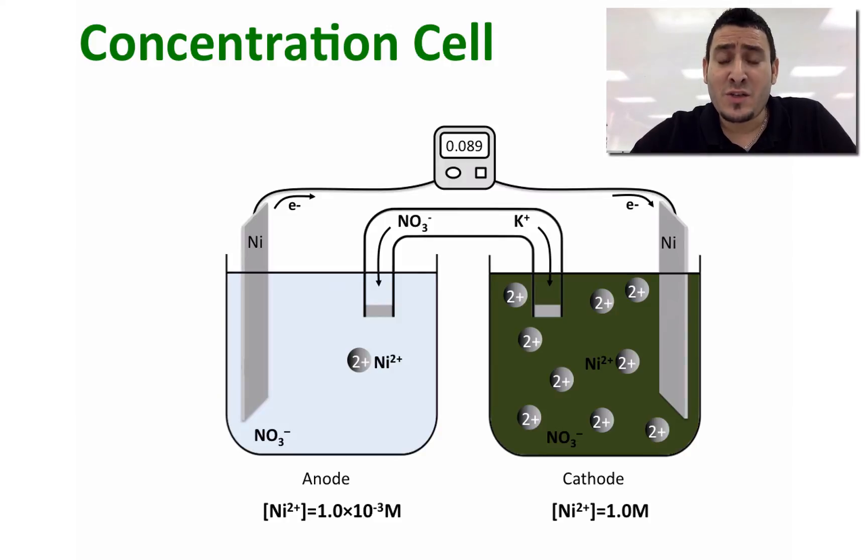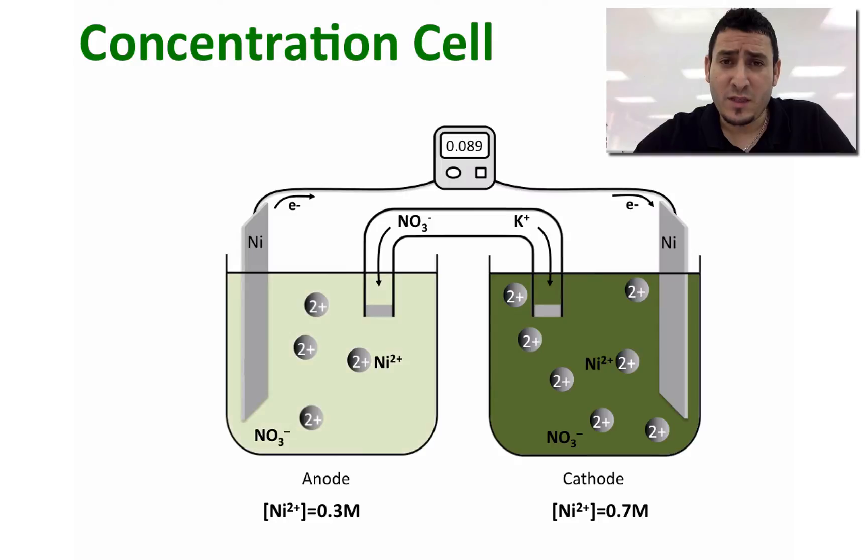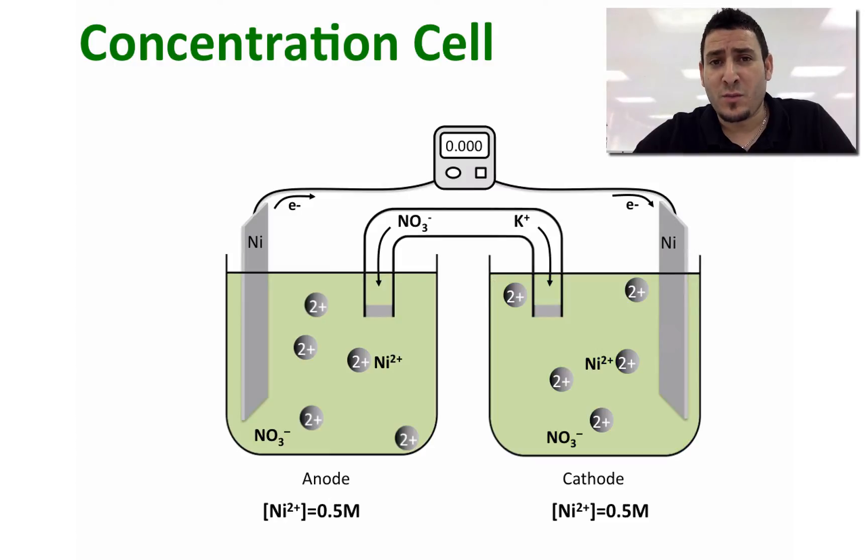The question now, in which direction will the electrons flow in this cell? The best way to answer this question is to think that nature will work to equalize both concentrations in both compartments. Therefore, the electrons will flow from the less concentrated compartment to the more concentrated compartment.